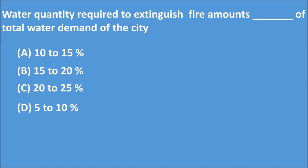Q4: Water quantity required to extinguish fire amounts to what percentage of total water demand of the city? Option A) 10–15%, Option B) 15–20%, Option C) 20–25%, Option D) 5–10%. The correct answer is Option D: 5–10%. Water quantity required to extinguish fire amounts to 5–10% of total water demand of the city.